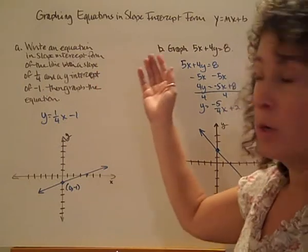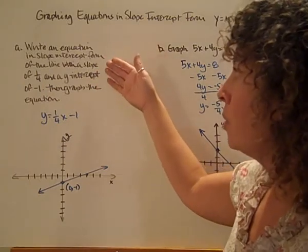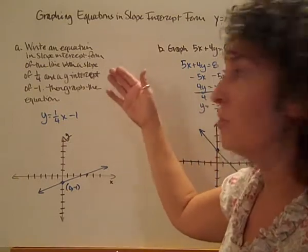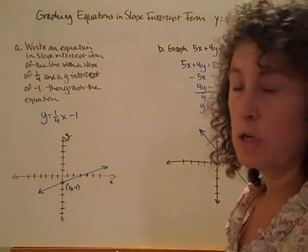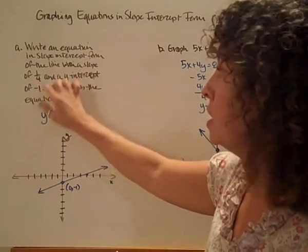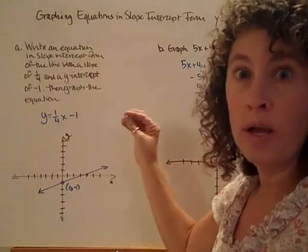So let's take a look at how we're going to use this. Write an equation in slope-intercept form of the line with a slope of 1/4 and a y-intercept of negative 1. Then graph the equation. So I have a slope of 1/4 and I have a y-intercept of negative 1. I'm going to plug those in to my equation.